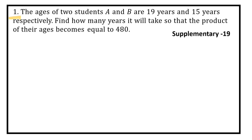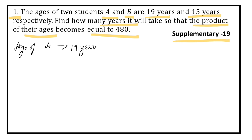The first question is taken from the 2019 supplementary exam question paper. The question is: the ages of two students A and B are 19 years and 15 years respectively. Find how many years it will take so that the product of their ages becomes equal to 480. Here it is given that the present ages of A and B are 19 and 15 years. Let after X years the product of their ages be 480.